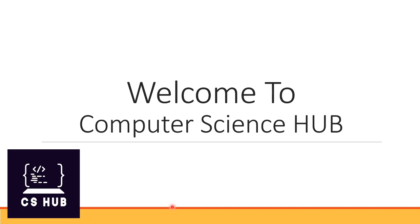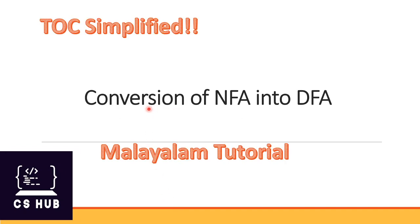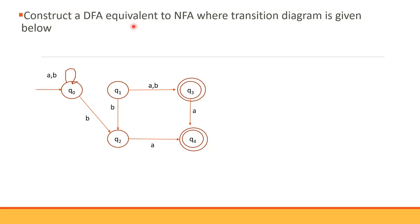Hello everyone, welcome to Computer Science Hub. Today's topic is the conversion of NFA into DFA. We are discussing the subject Theory of Computation. In the previous video we covered the equivalence of DFA and NFA, and how to convert an NFA into DFA with one example. This is another example for this conversion of NFA into DFA. The question is: construct a DFA equivalent to the given NFA where the transition diagram is given below.